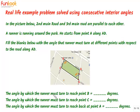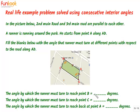The first fill-in-the-blank is the angle by which the runner must turn to reach point B. The runner is running along AD, takes a turn, runs along DB, and reaches point B. We have to find the angle turned by the runner in reaching point B.